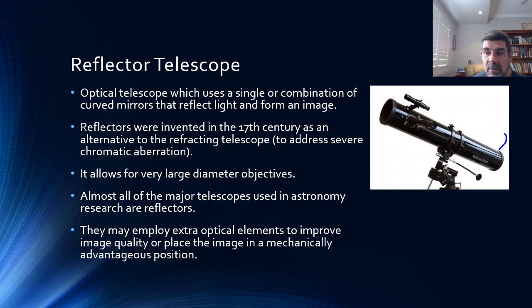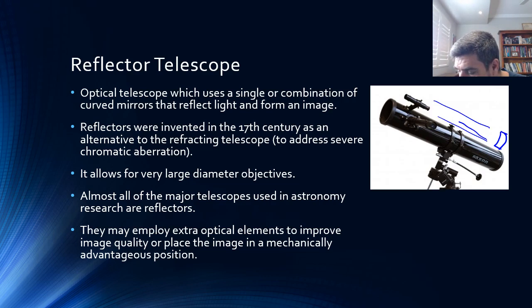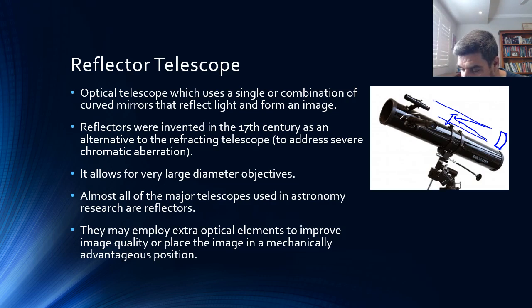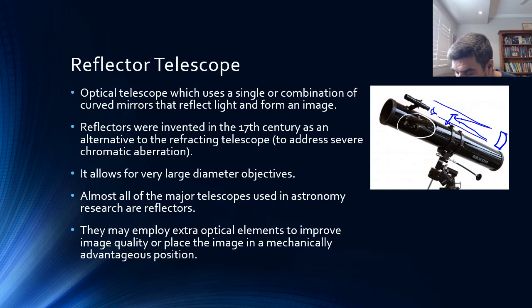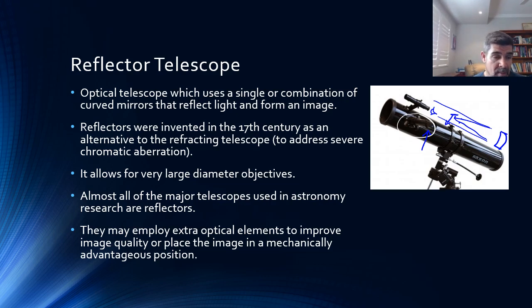Telescope makers found that if a mirror was set in and the incoming light reached that mirror and was bounced back to a focal point, and then often another mirror would angle that through to an observer — which is the little section just here — you could sight by looking here, and to see the image magnified, you would look right here. Reflectors allowed for much bigger diameter mirrors and therefore were able to detect objects further away than what could be detected with refractors.